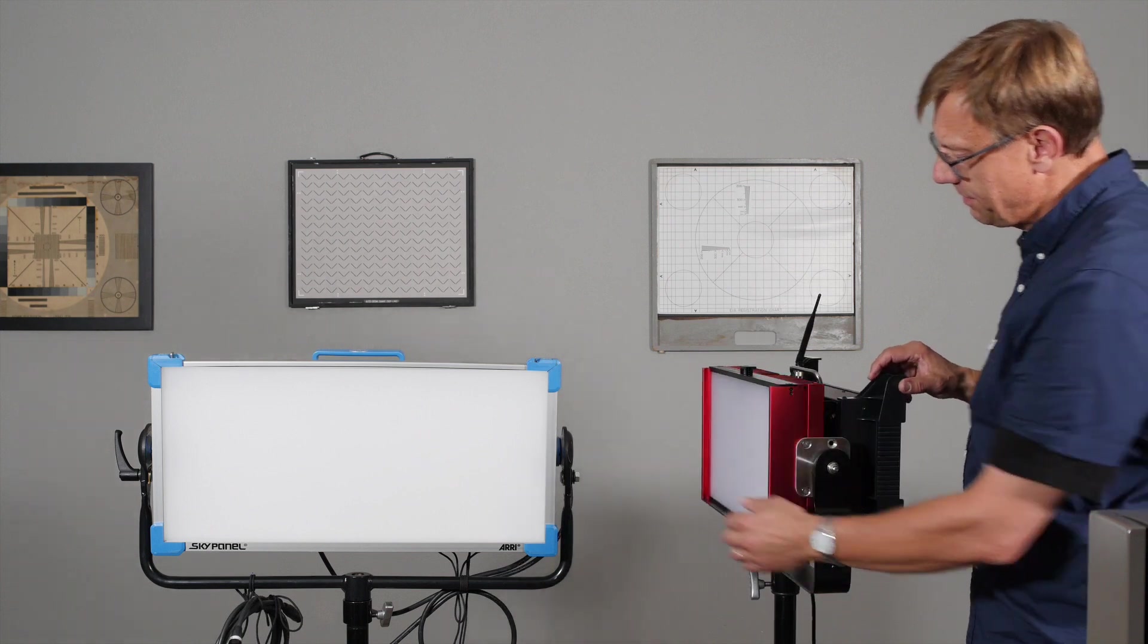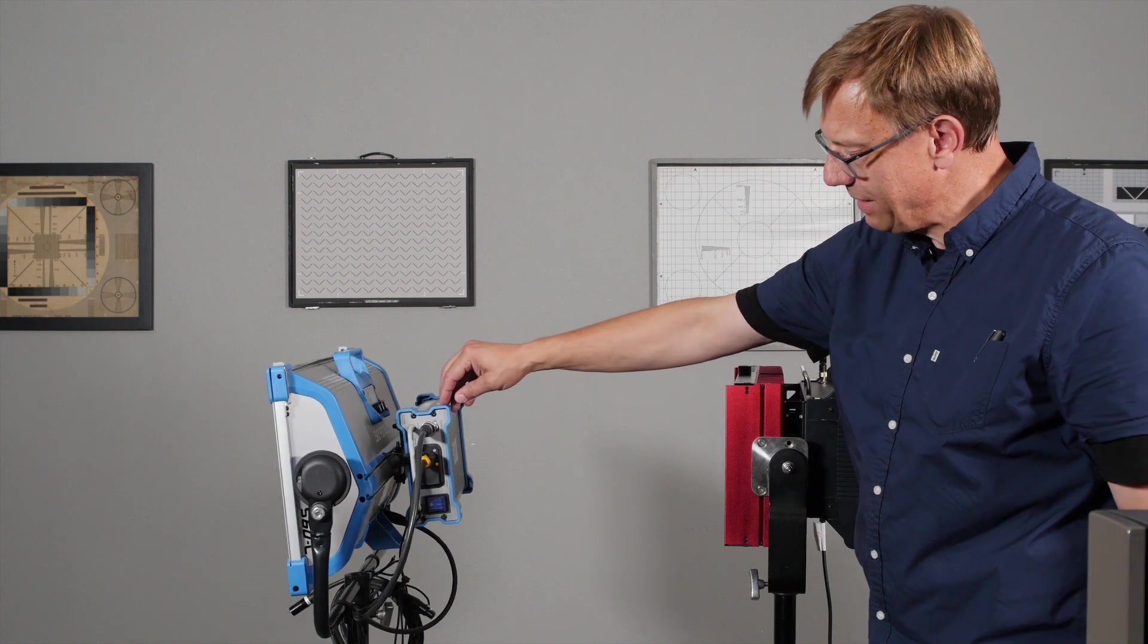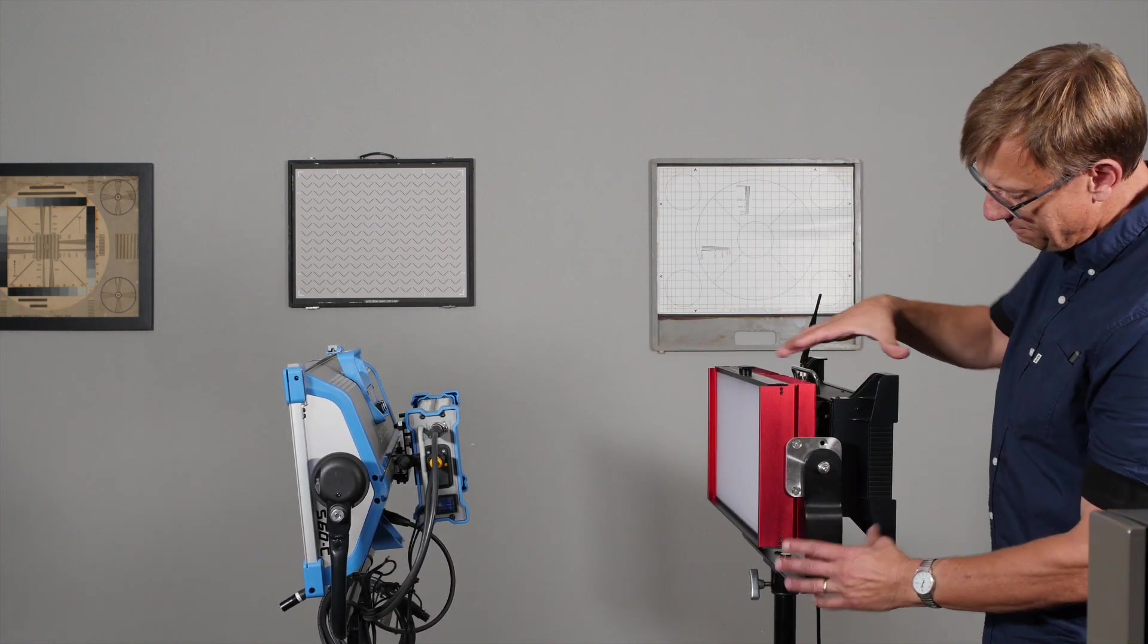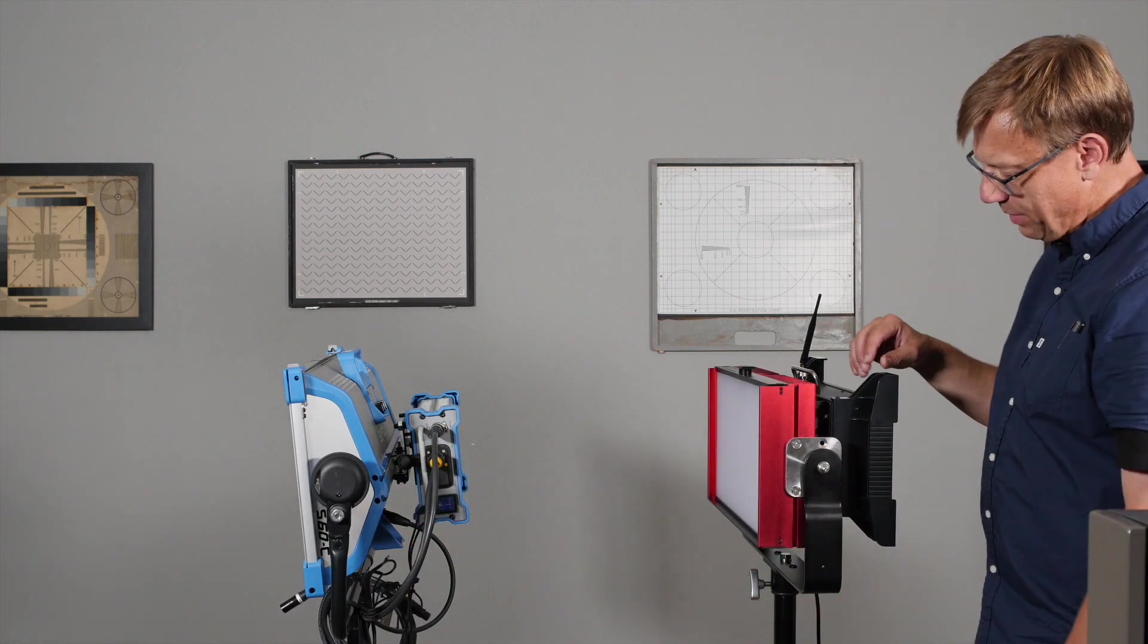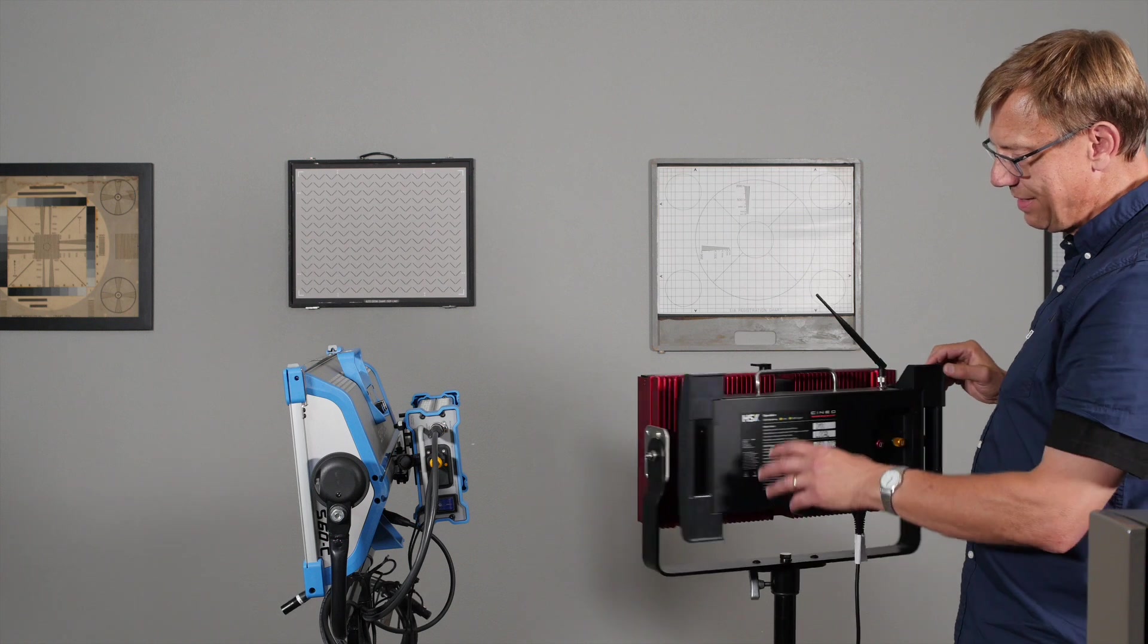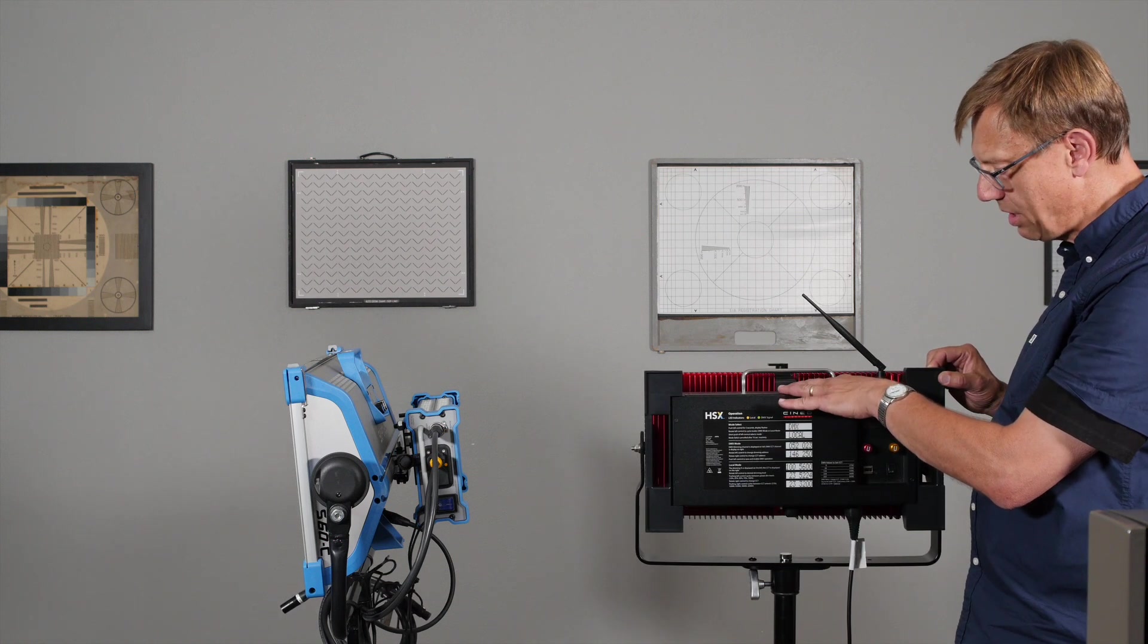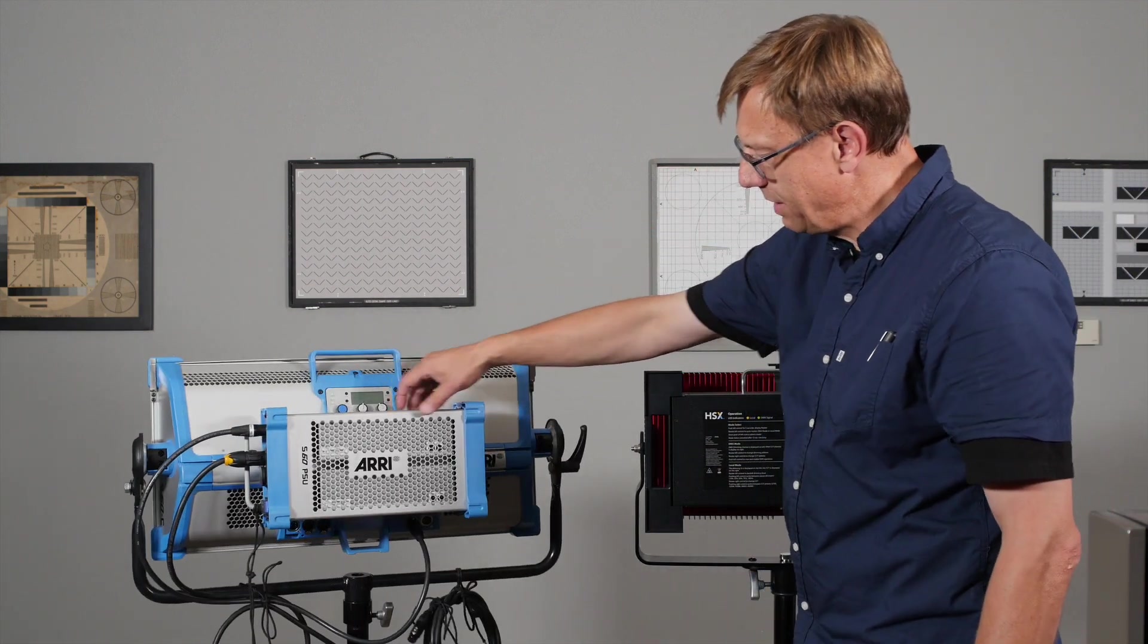If you see them side by side on their side angle, you can see I attached the ballast to the S60 just to give you an idea that it's about the same depth when you compare it to the HSX, which has its ballast attached permanently. So you're not taking this off, whereas you can take it off on the Arri.